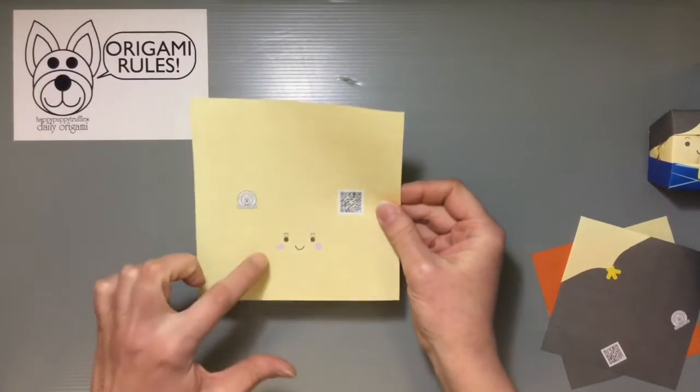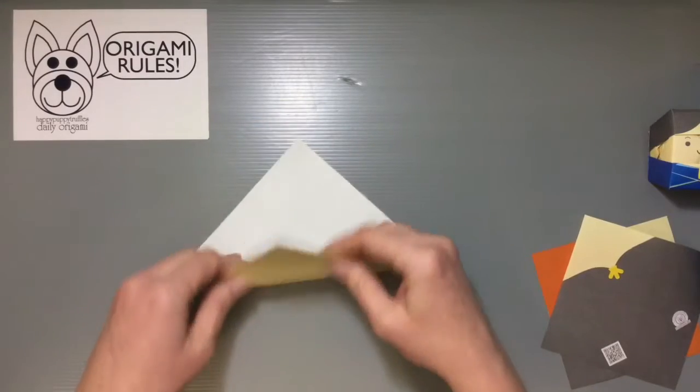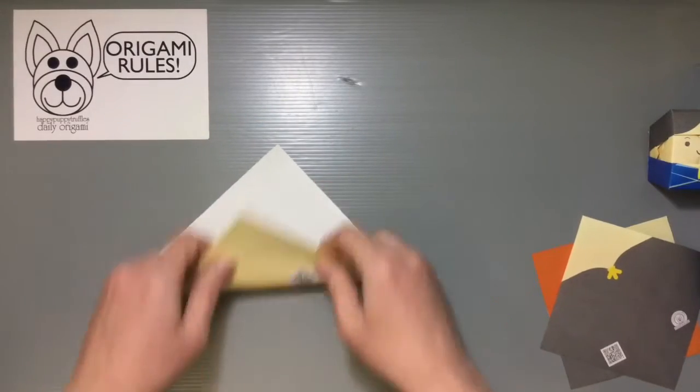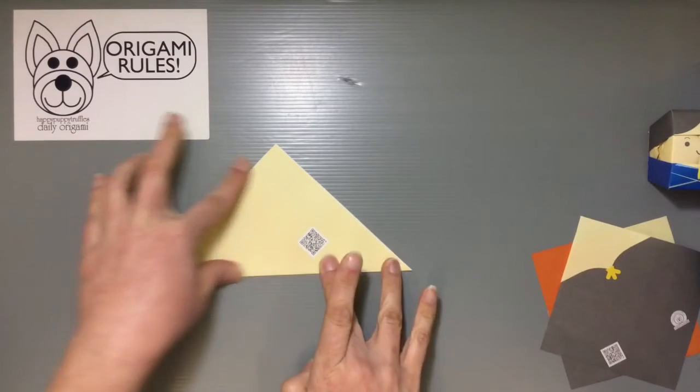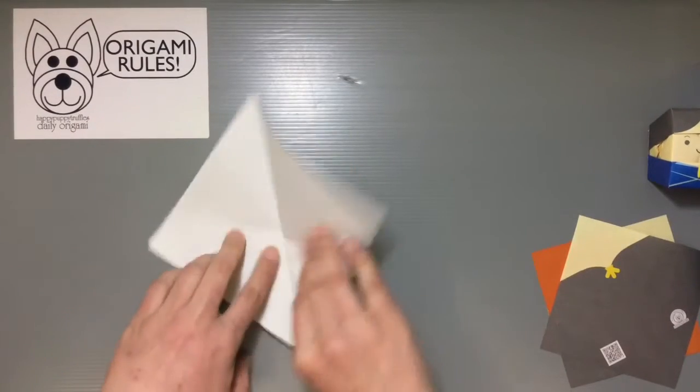What we want to do is starting off with the paper here. We want to start with the color side facing down and fold into a big triangle. And fold the other way as well.